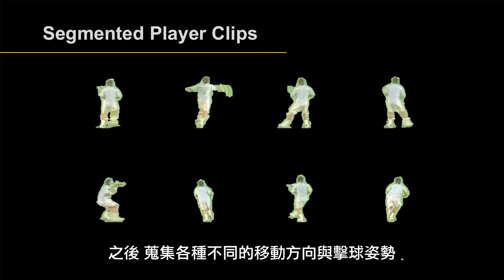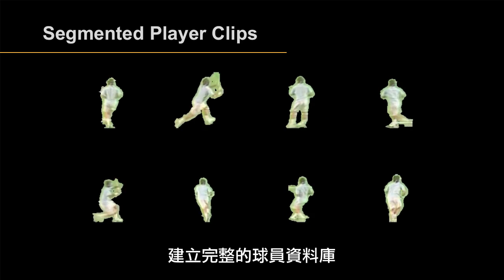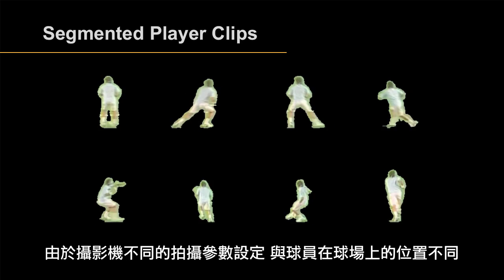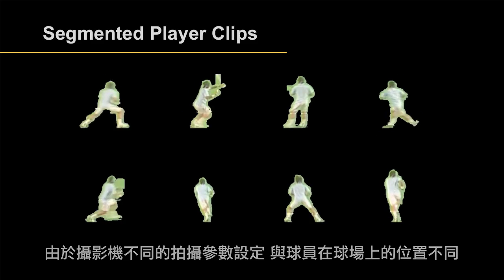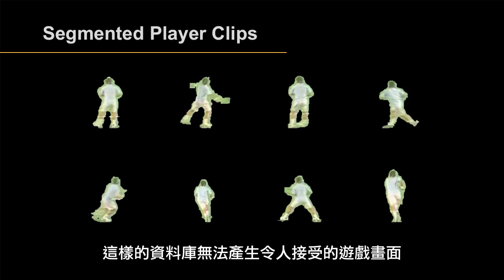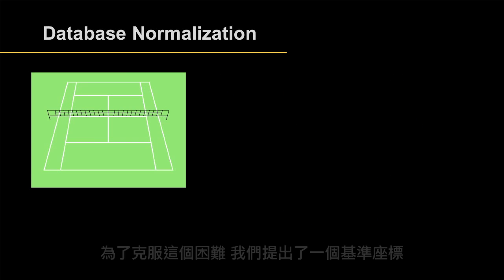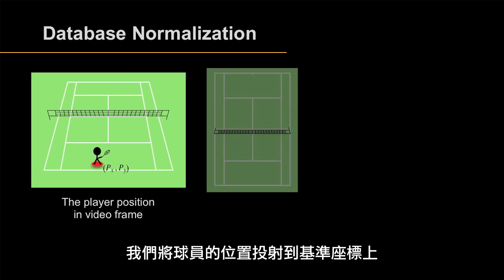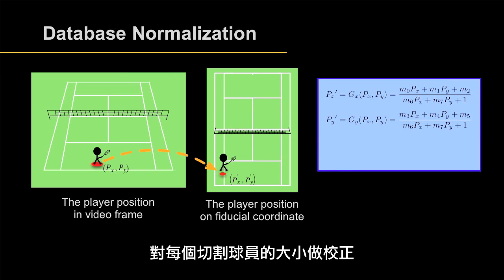After that, we gather various motion directions and different hitting postures into a player database. The size of each player is different due to the camera's zoom in and zoom out parameters and the position of the player on the court, which results in an uncomfortable vision experience. To overcome this, the fiducial coordinate is proposed. We project the player's position in the video frame onto the fiducial coordinate and normalize the player size by calculating the partial differences to get the magnification ratio according to the player's position on the fiducial court.